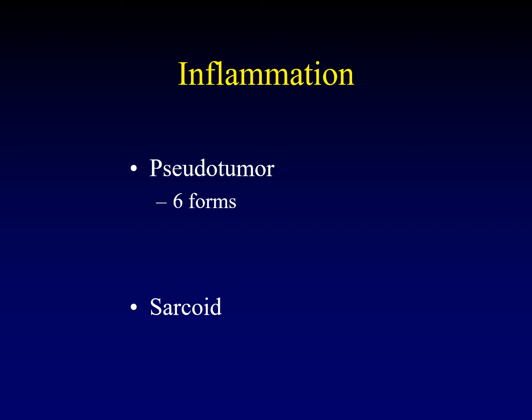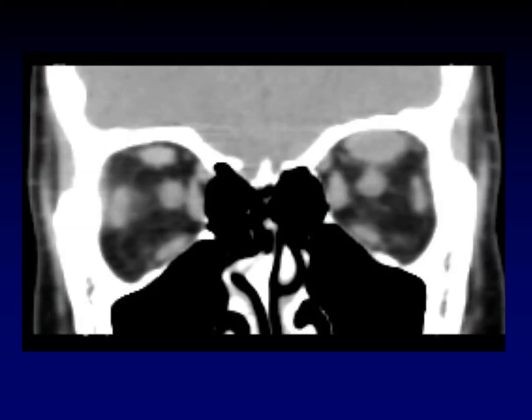You can get an anterior or episcleral form of pseudotumor, a posterior or apical form, or the diffuse form in which the entire orbit is inflamed. Sarcoid is a fantastic mimic of any of these forms of pseudotumor. Here's an example of the myositis form in which a single muscle complex is enlarged and inflamed, with inflammation often extending into the surrounding fat.